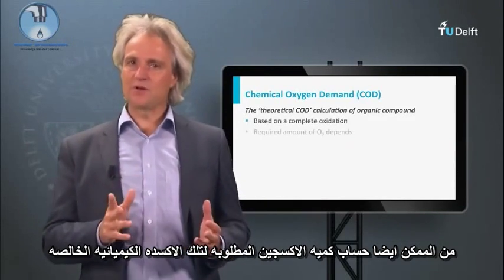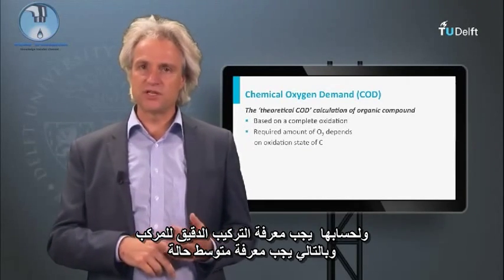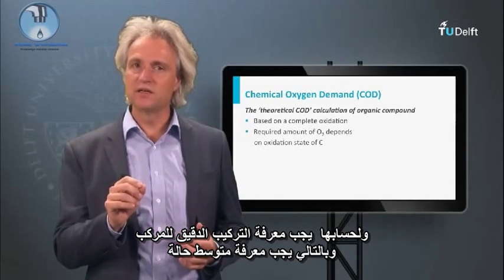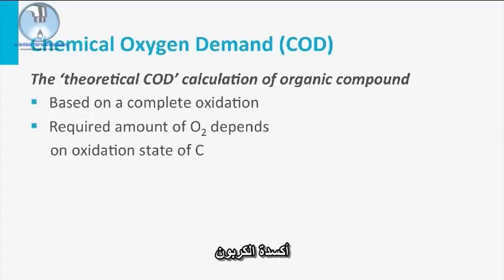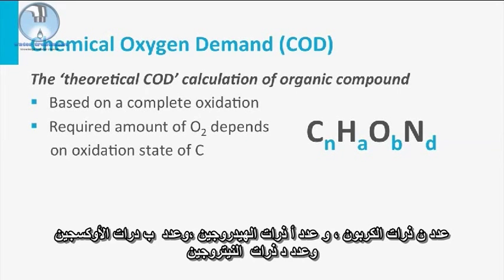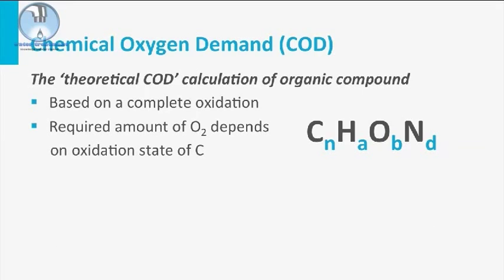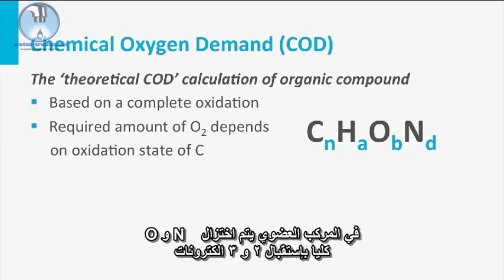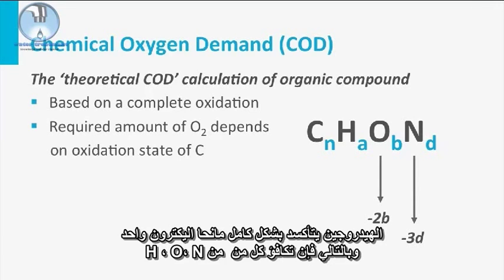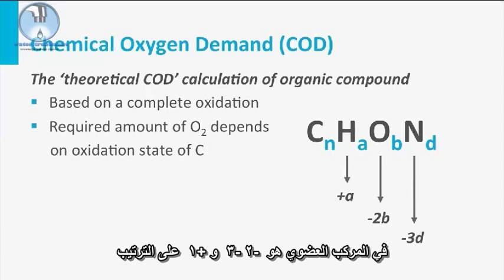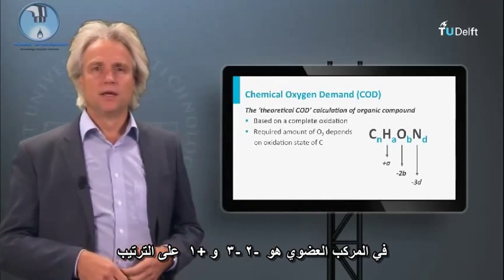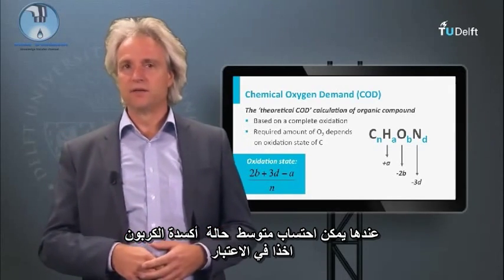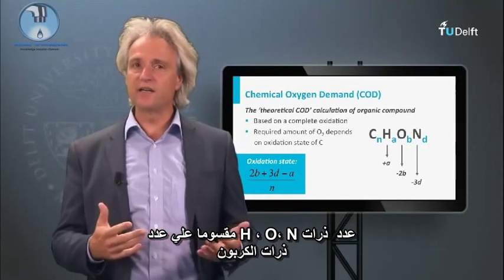The oxygen requirement for this pure chemical oxidation can also be calculated. For this, the exact composition of the compound, and thus the average carbon oxidation state, must be known. Imagine a hypothetical organic compound consisting of N carbon atoms, A hydrogen atoms, B oxygen atoms, and D nitrogen atoms. In an organic compound, O and N are fully reduced and have taken up two and three electrons respectively from the carbon atom. Hydrogen is fully oxidized and has delivered one electron. So the valence of H, O, and N in an organic compound is plus one, minus two, and minus three, respectively. The average oxidation state of the carbon can then be calculated, taking the number of H, O, and N atoms into account divided by the number of carbon atoms.